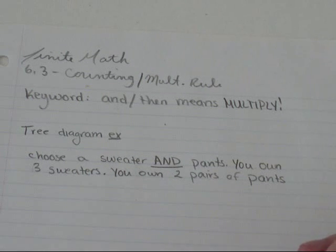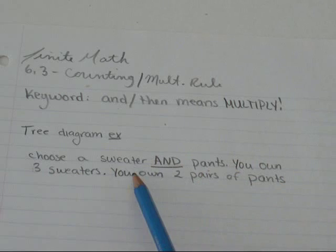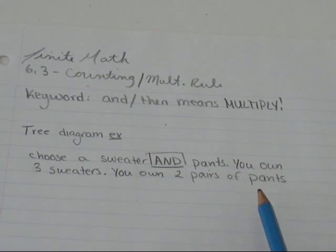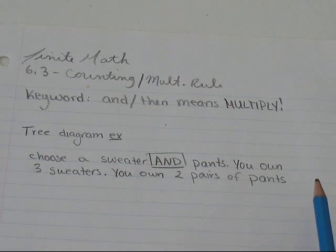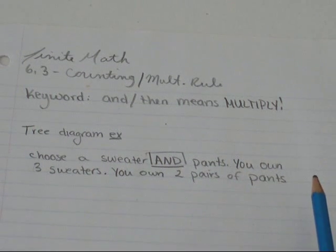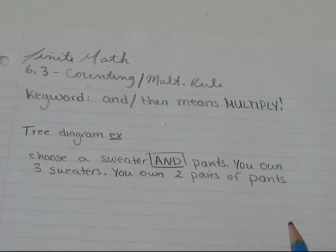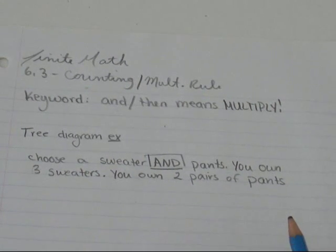So I'm going to do this example, and hopefully it will all make sense. How many ways are there to choose a sweater and, the magic word is 'and', how many ways are there to choose a sweater and pants? You own three sweaters. You own two pairs of pants.